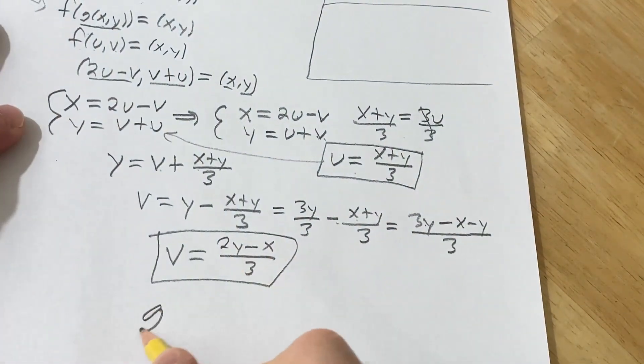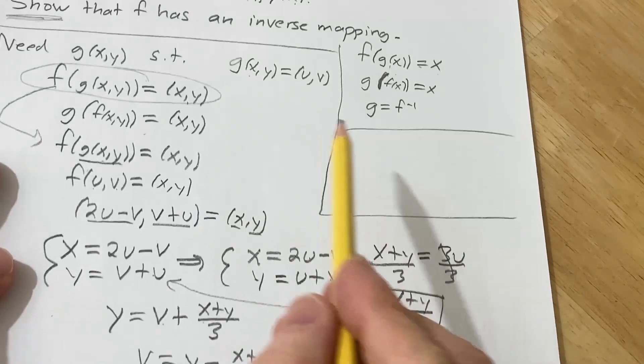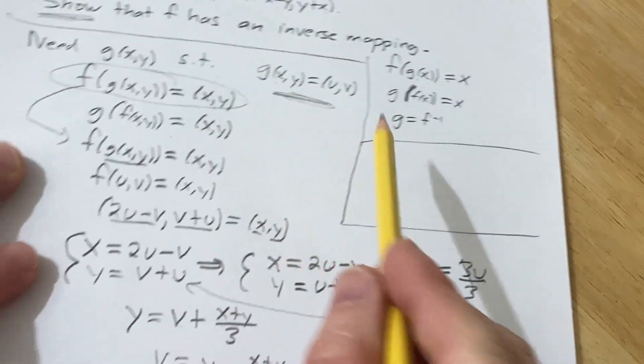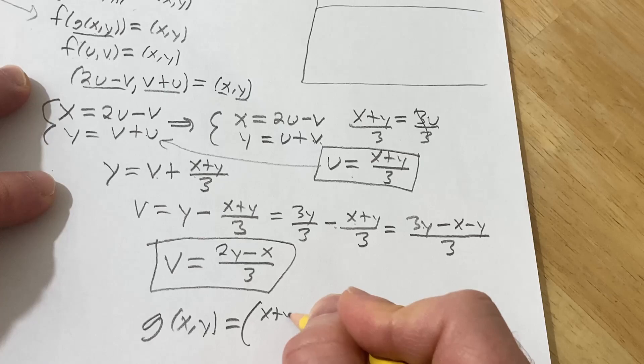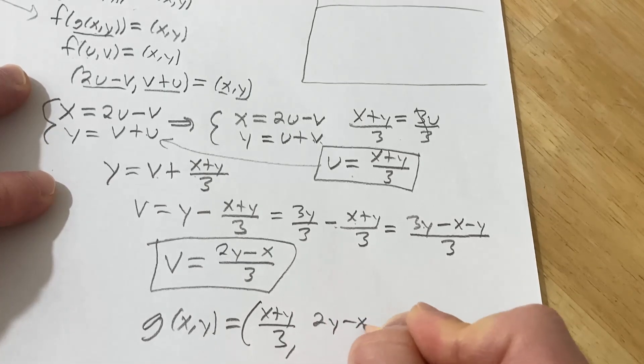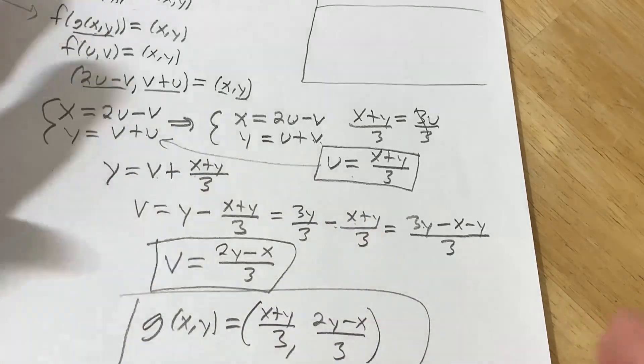So now we have u and v. That means we have g. So g of (x,y) in this problem, well, we said that it was going to be (u,v), right? But now we have u and v. So it'll be ((x + y)/3, (2y - x)/3). So that's going to be the inverse of f. So it should work.